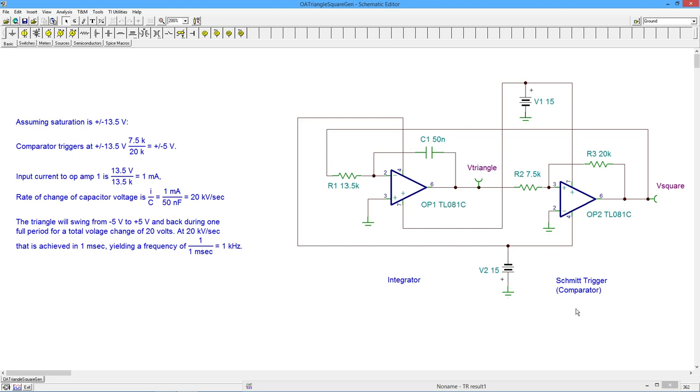Down to minus 5 to plus 5, as this output is swinging back and forth, plus and minus saturation. So from minus 5 to plus 5, and then plus 5 to minus 5 is a total change of 20 volts. How long is that going to take?